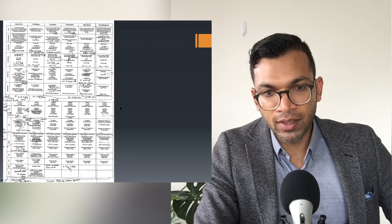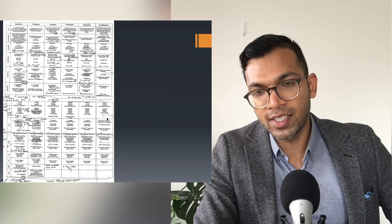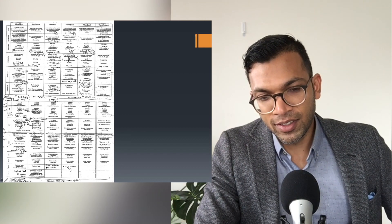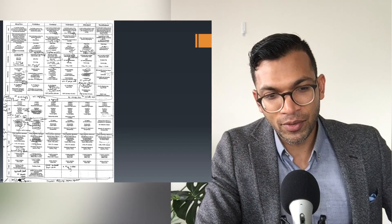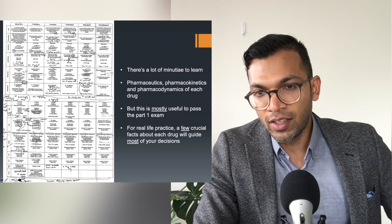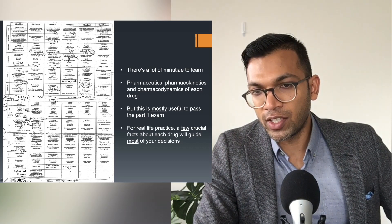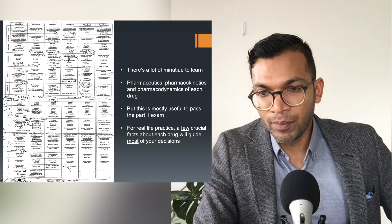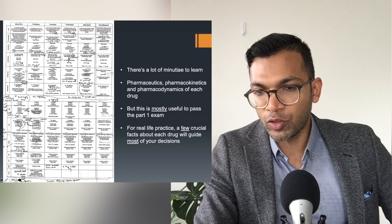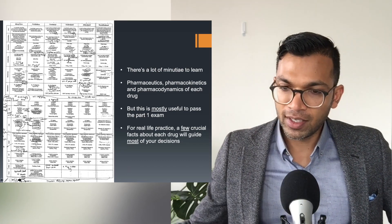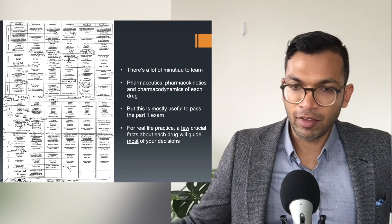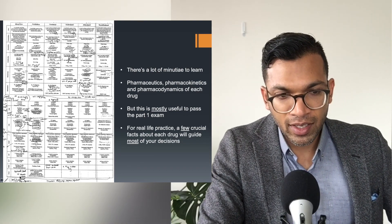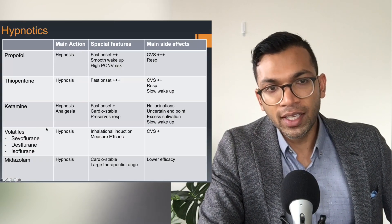It sounds incredibly annoying, but you notice there are a whole bunch of patterns in this very busy, complex table. The pharmacokinetics and dynamics for each drug are important, but mostly useful for passing the Part 1 exam. In real life, all our decisions are made on just a few crucial facts, which are really the decision-making facts in the tables I've provided. You'll get very comfortable with a few patterns as we go on.